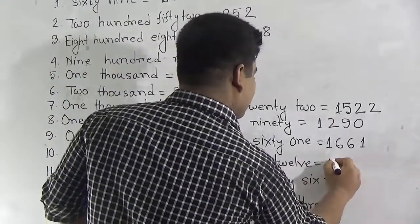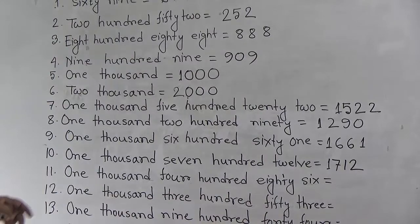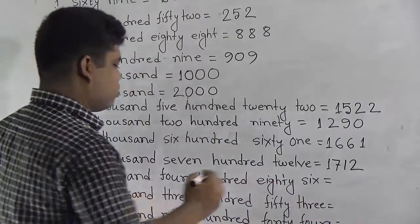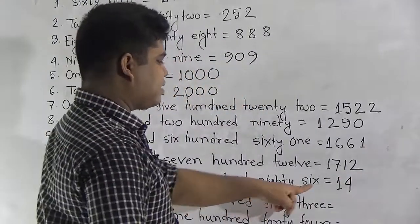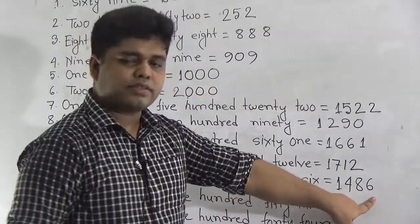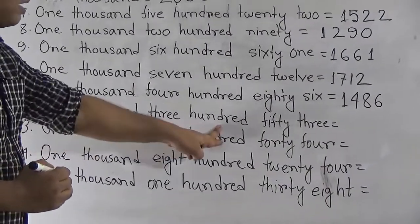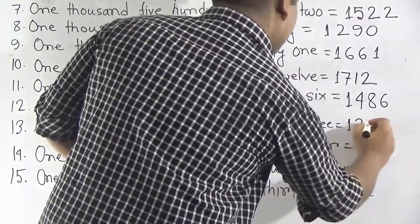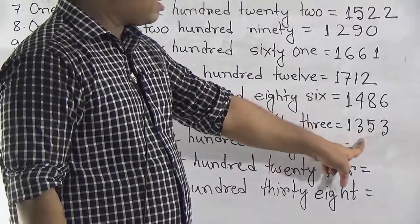Write 1,712. Our next number is 1,486. We write 1,353 — 1,300 means 3, and 53 means 5 and 3. So it is called 1,353.